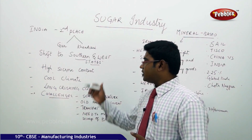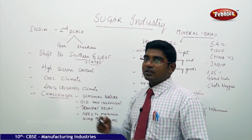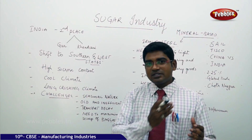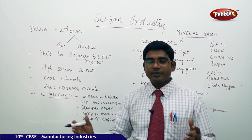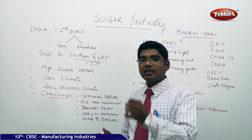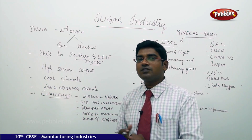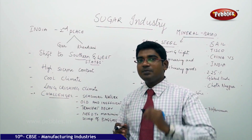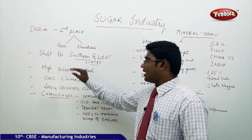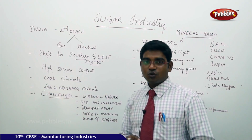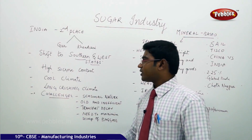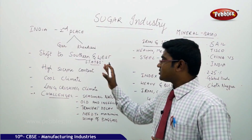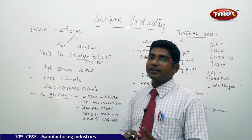When there is high sucrose content and there is a transportation delay, that will automatically result in the loss of the sucrose content. That is the main reason why proximity to mills matters. The next advantage is the cool climate in the west and southern India, which helps preserve the sucrose content.